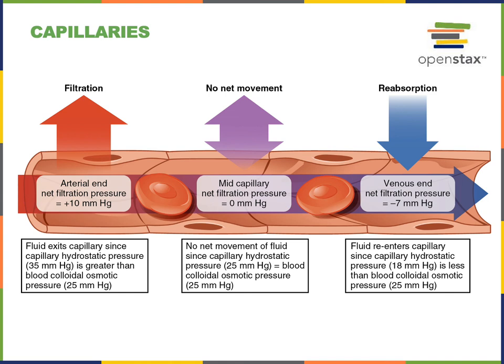Further towards the venules at the venous end of the capillary, the capillary hydrostatic pressure has fallen below the blood colloidal osmotic pressure, with a capillary hydrostatic pressure of 18. Subtracting the colloidal osmotic pressure of 25 from 18, we calculate a net filtration pressure of negative seven millimeters of mercury. This negative net filtration pressure drives reabsorption, forcing liquid back into the blood at the venous end of the capillary bed.